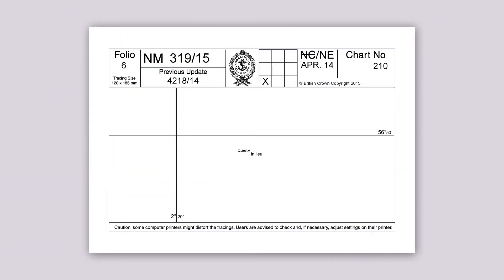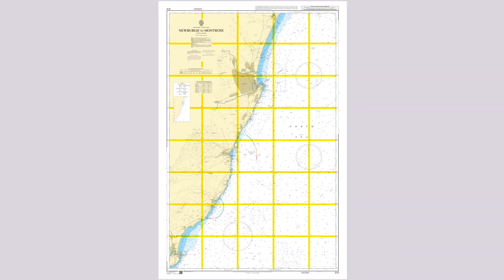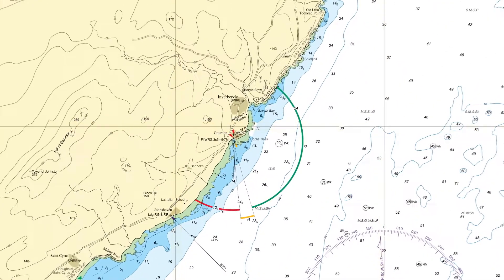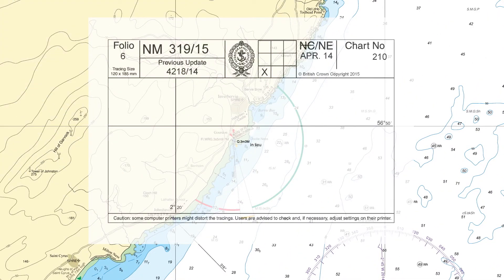This example will demonstrate how to amend the range of a light. Start by using the grid box to reference the NM position on the chart. Then, using the latitude and longitude guides on the tracing and the chart, lay the tracing to its exact location.